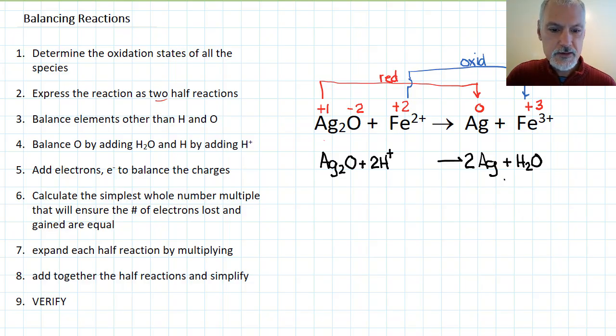And now finally to balance the charge. On this side the total charge right now is zero, and the total charge on this side right now is plus two. You always go to the higher side and add electrons to bring it down to match. So in this case I'm going to add two electrons here, and I now have a balanced half reaction.